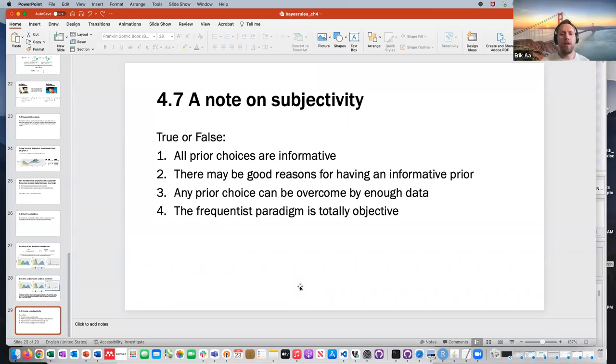Number three, any prior choice can be overcome by enough data. Eric. Yeah, I guess we saw that like if the prior is limited so that there's zero probability in the space where the likelihood is, the prior would not be influenced by the likelihood. Is that a fair way to put it? Like the previous example, the 0 to 0.25 uniform prior. So I would say false. Correct. Okay.